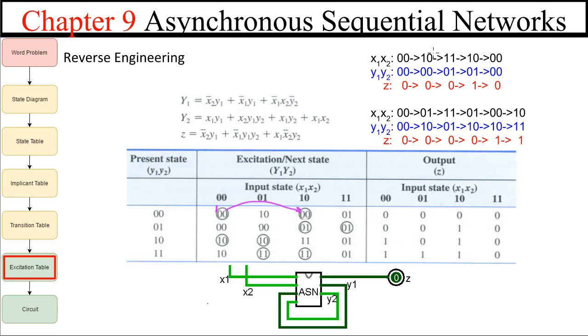This table is the same for both the synchronous sequential network and the asynchronous sequential network. But here's where it gets a little bit different. When we change x2 to a 1 and we move to here, it's not our next state. It's immediately our present state, instantaneously our present state. And it's not stable.